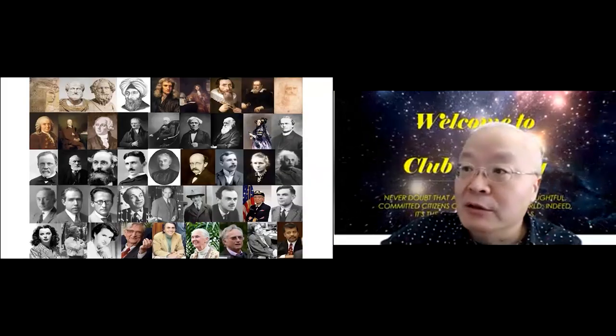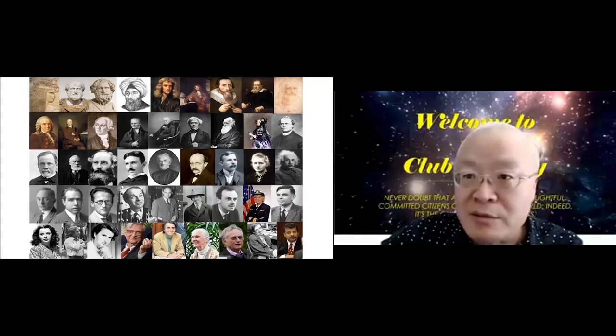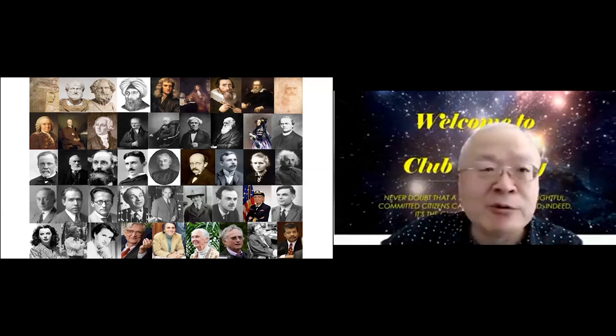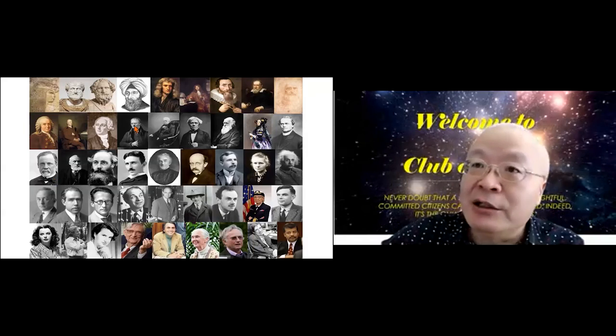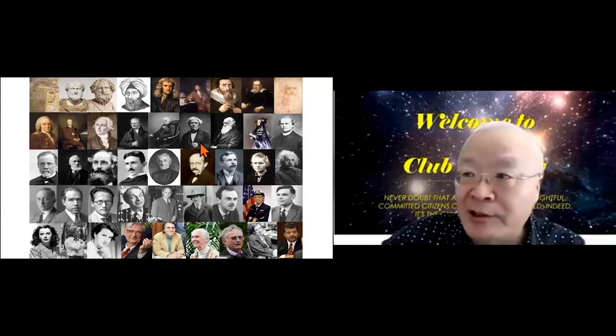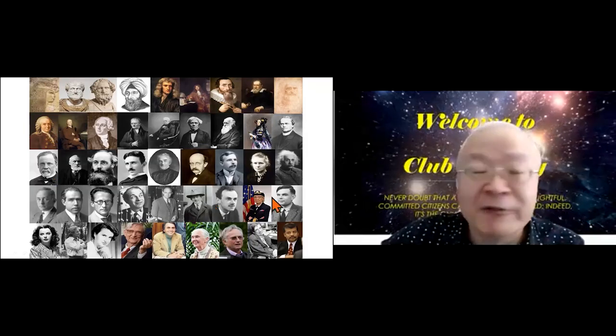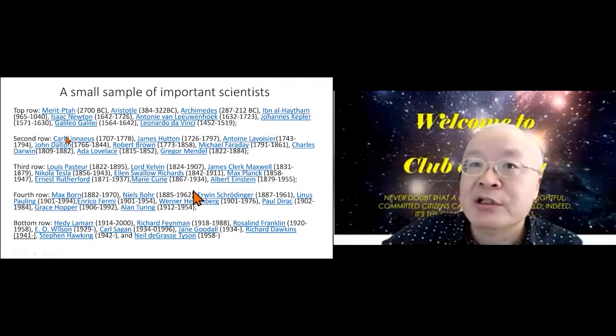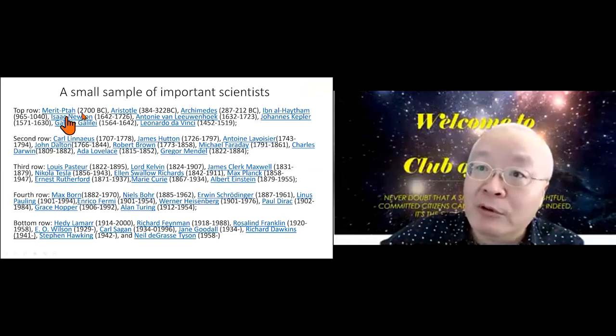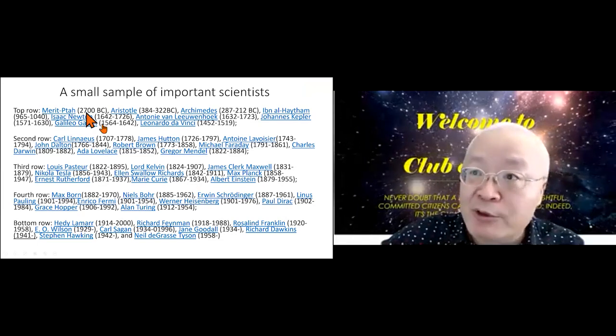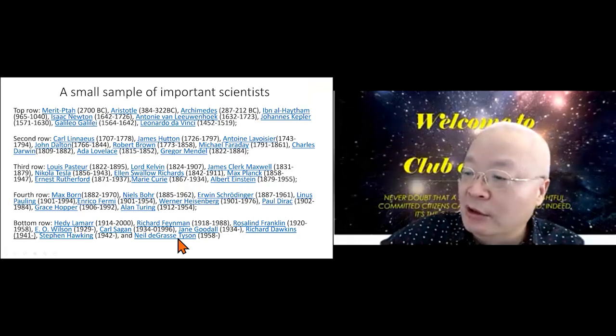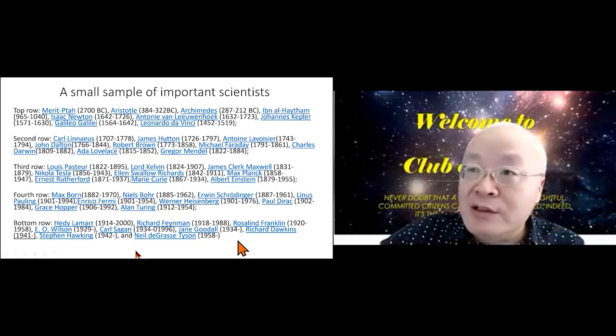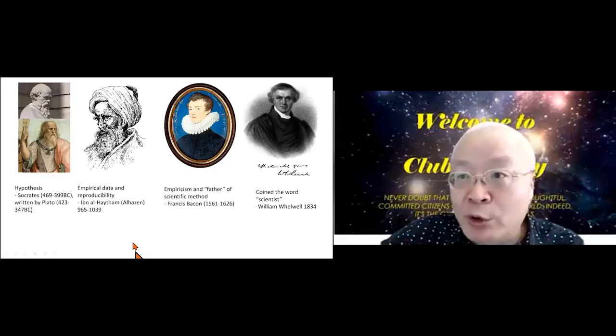Reviewing who are the famous or acknowledged scientists. Here is a small collection of them. Many of them you can recognize. These are the names from 2700 BC all the way to nowadays. These are the examples when we talk about science.